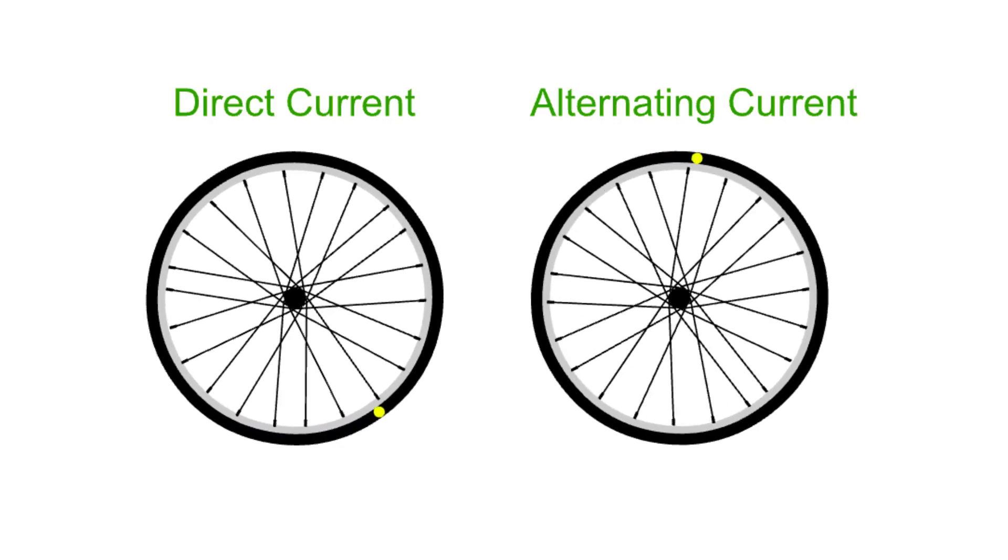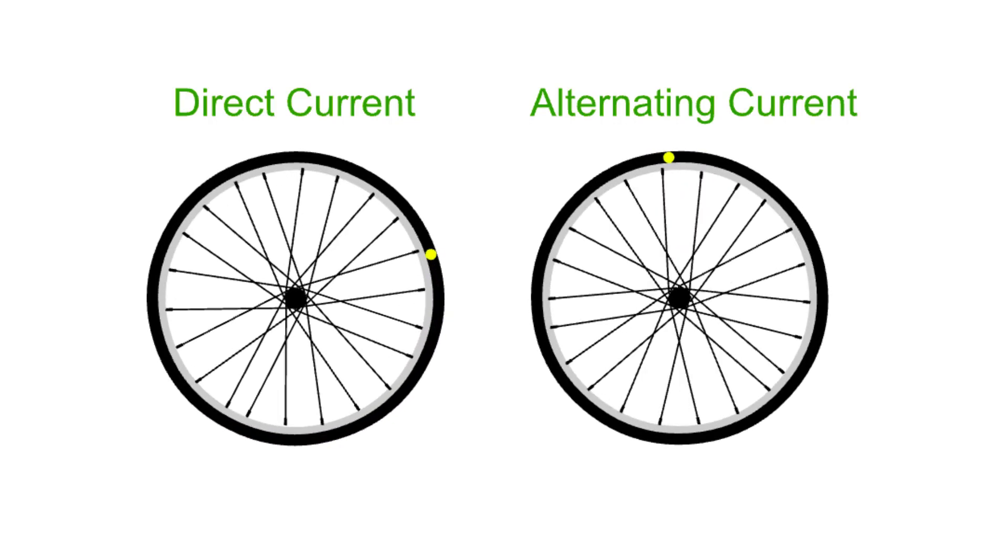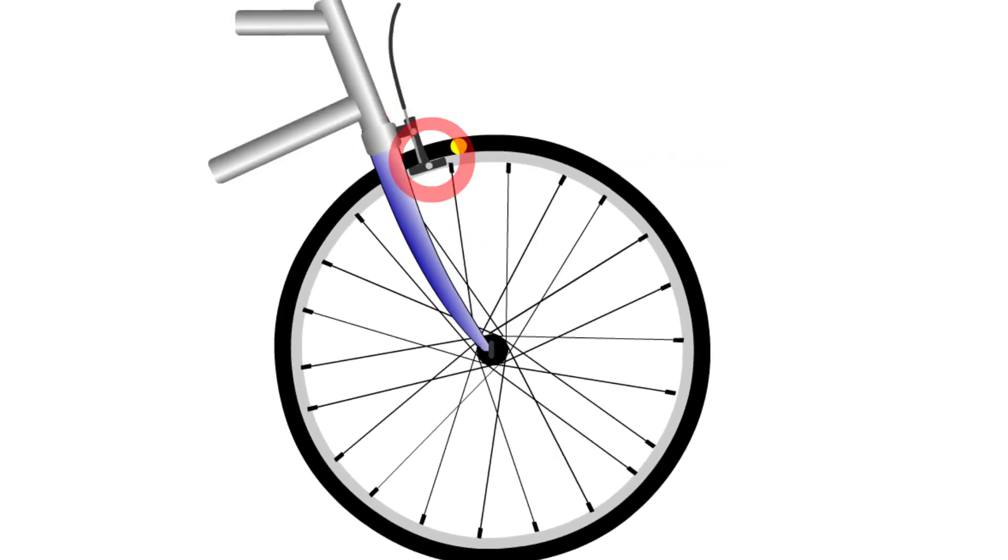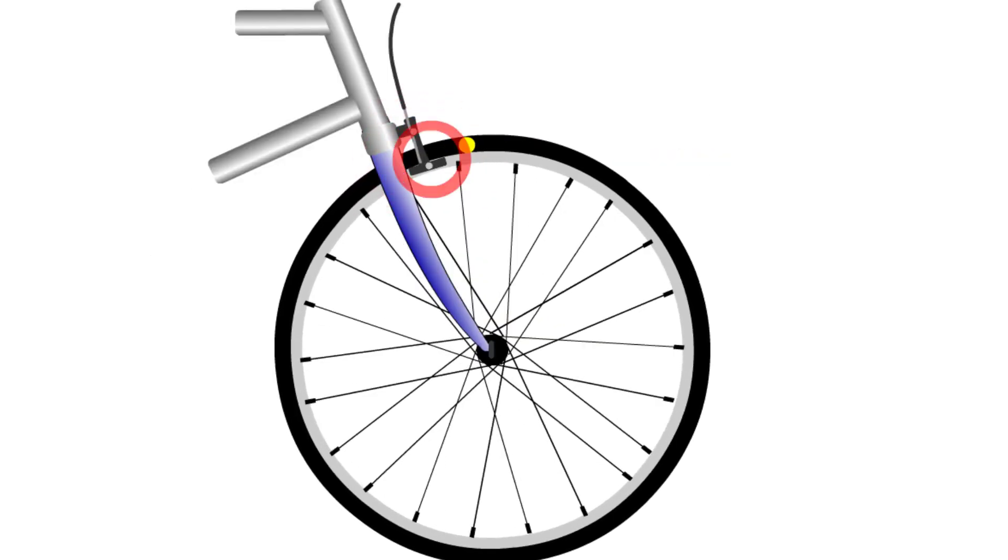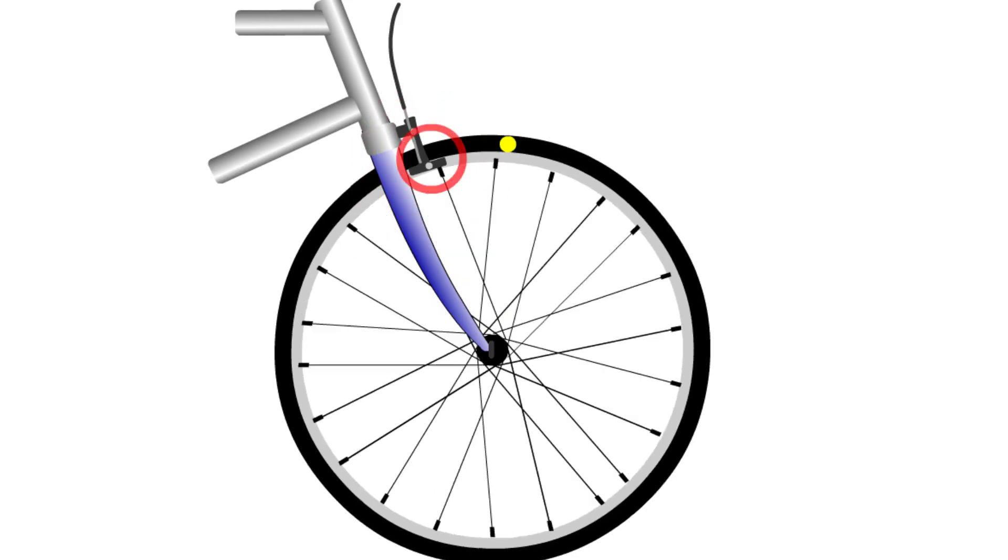Just like the wheel, the current changes direction everywhere at the same time. Energy can still be transferred just like the wheel can transfer energy to the brake.